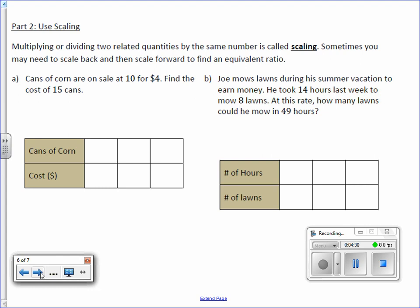Multiplying or dividing two related quantities by the same number is called scaling. Sometimes you may need to scale back and then scale forward to find an equivalent ratio. For example, letter A.